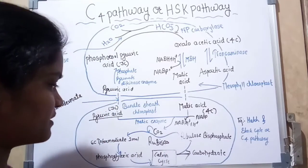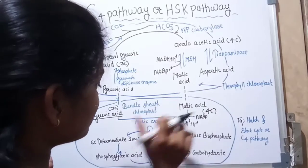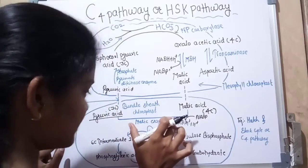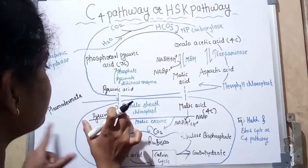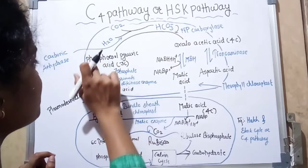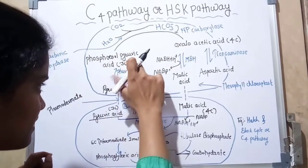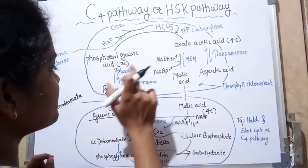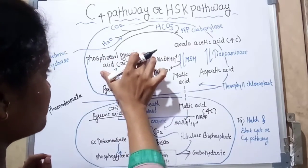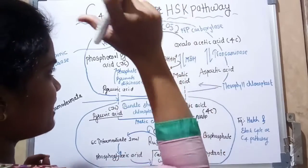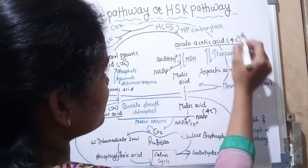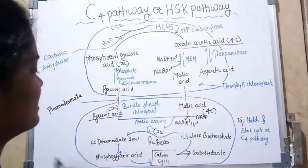The pyruvic acid formed in the bundle sheath cells is transferred back to the mesophyll cells through plasmodesmata. There, pyruvic acid is converted back into phosphoenolpyruvate (PEP), a three-carbon compound, by the enzyme pyruvate phosphate dikinase. This regenerated PEP again binds with dicarboxylic acid to form oxaloacetic acid, the first stable compound in the C4 pathway, and the cycle runs again.